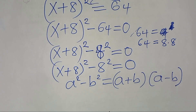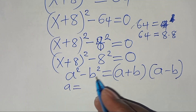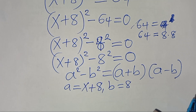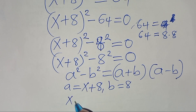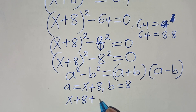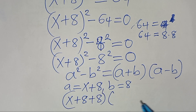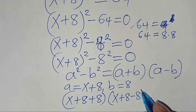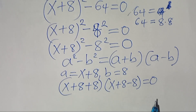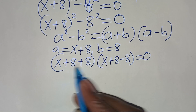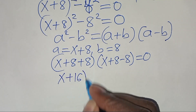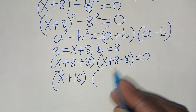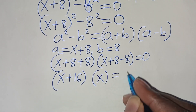Applying this property, we identify a as x plus 8, and b equal to 8. So a plus b is the same as x plus 8 plus 8, and a minus b is x plus 8 subtract 8, equal to 0. Simplifying: x plus 8 plus 8 gives x plus 16, and x plus 8 subtract 8 gives x, equal to 0.